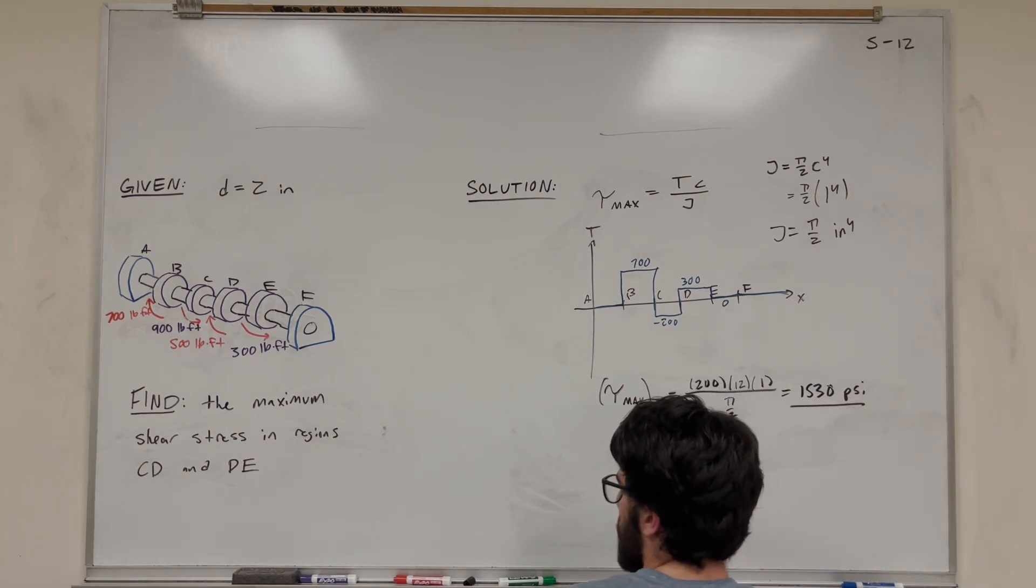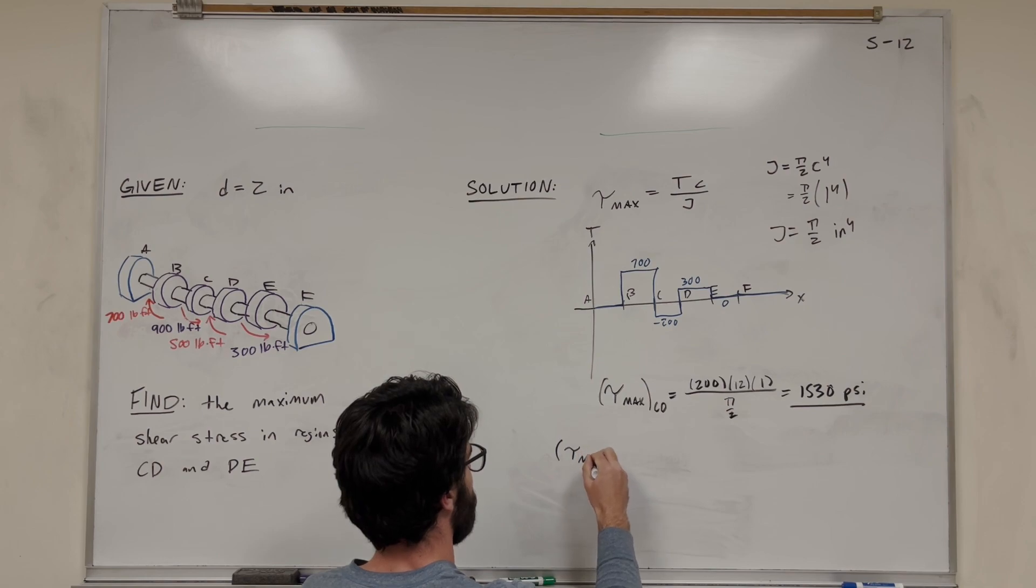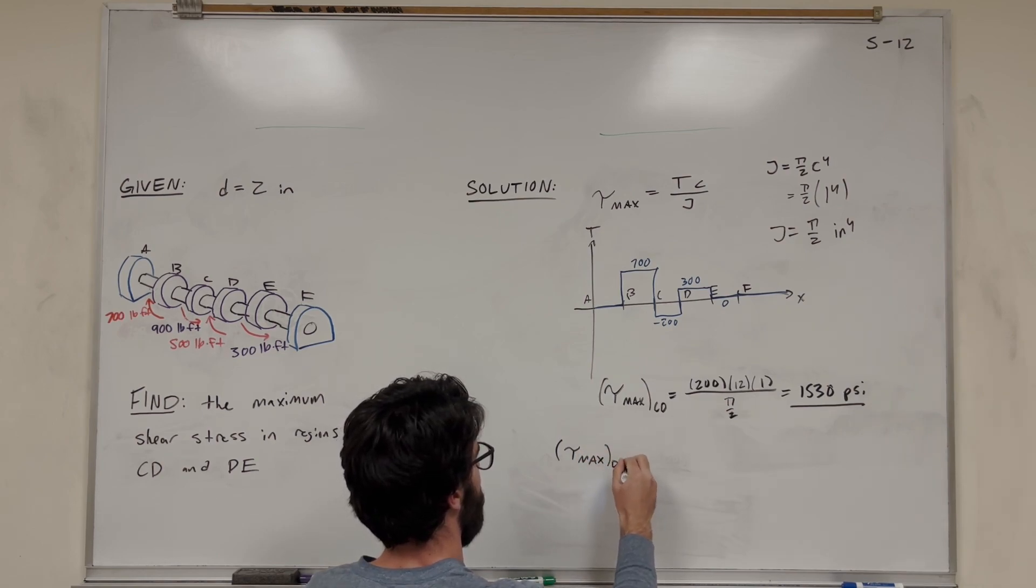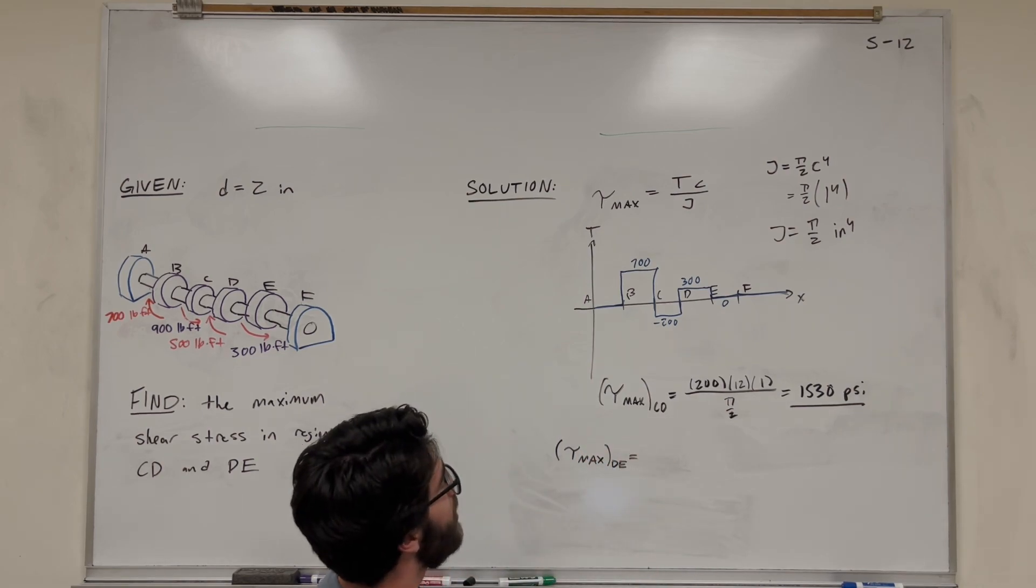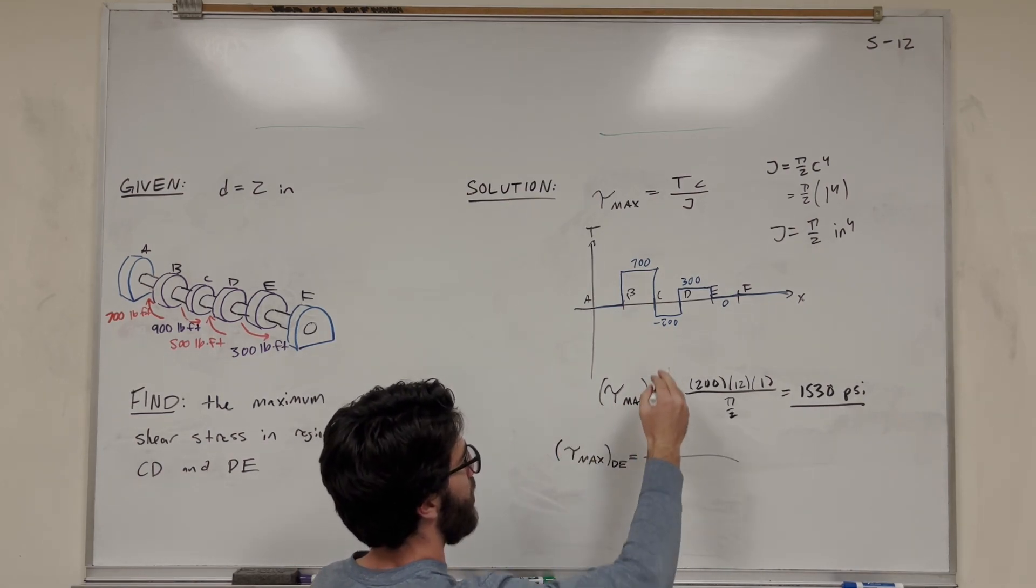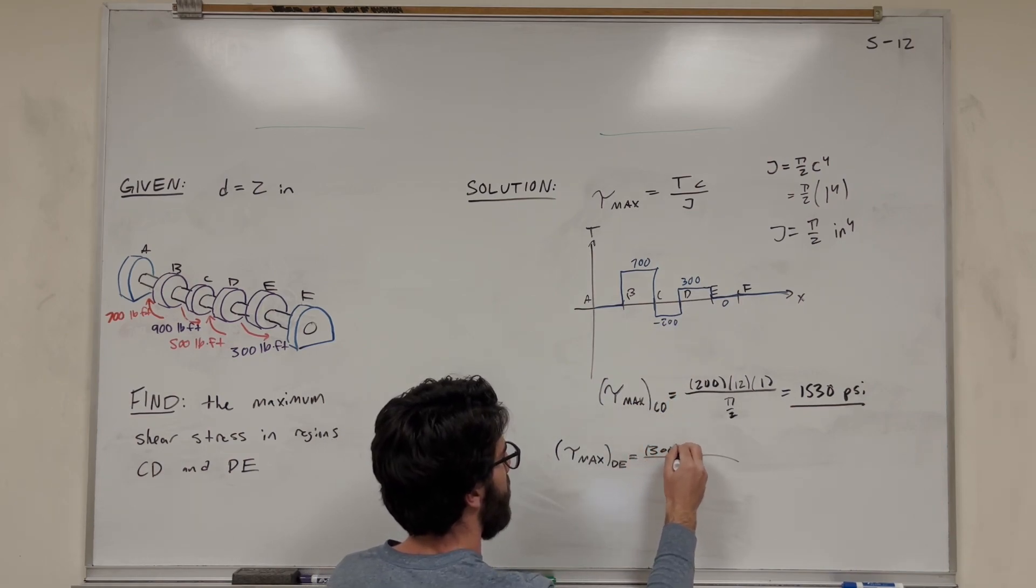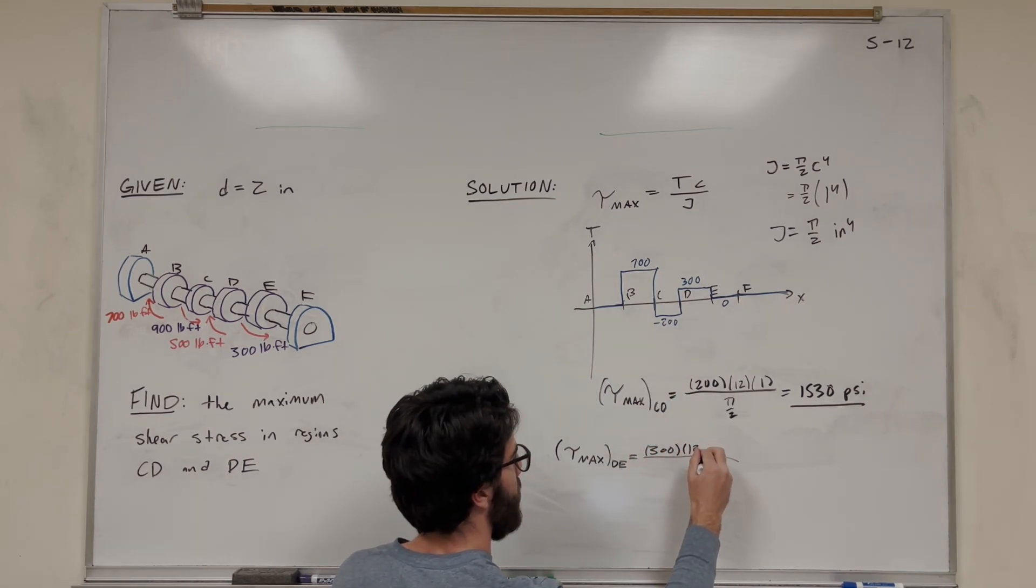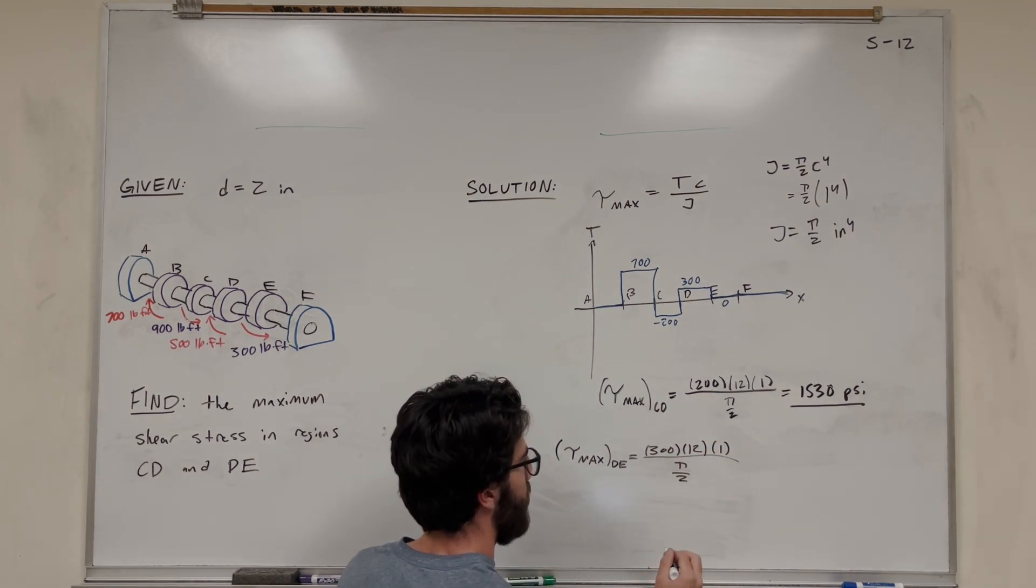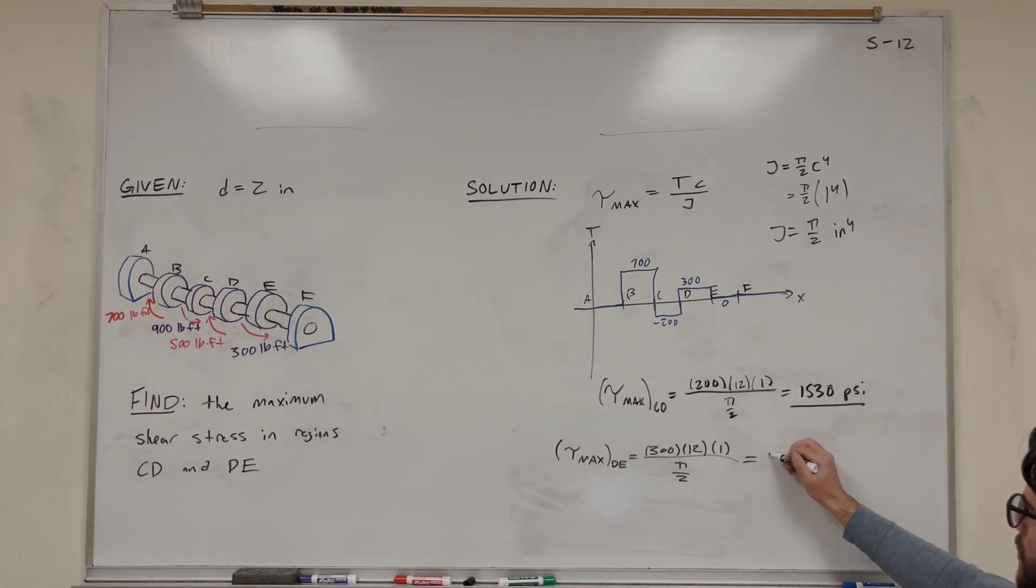All right, let's find our max in DE. So now we're using the torque in DE, so we know that it's 300 there. So we're going to put in 300 pound feet. Now we're going to put in a 12 to convert to inches. Radius is 1, and then that polar moment of inertia is pi over 2. And you're going to find that this in DE is equal to 2,290 psi.